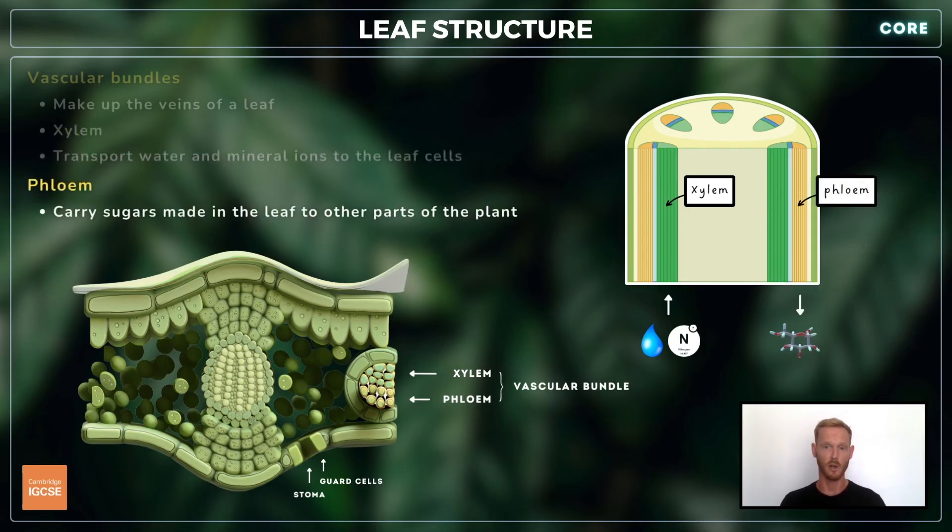Phloem vessels, which are located on the outside of the bundle, carry sugars and other products like amino acids away from the leaf and to the parts of the plant that require them.